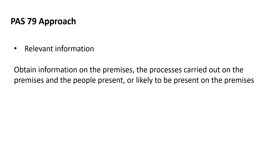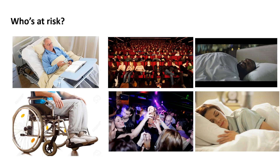The first step within PAS 79 is looking for relevant information — something which the five-step approach doesn't really cover. We're looking at what is relevant to the fire risk assessment: what does the building do, what are the processes happening, how is this building going to impact on fire safety and ultimately the safety of occupants?